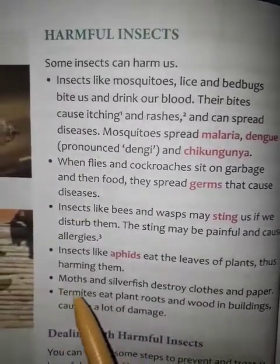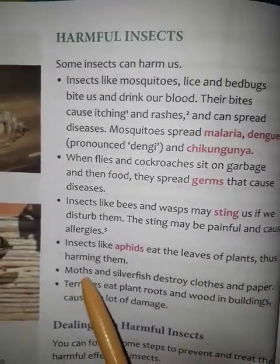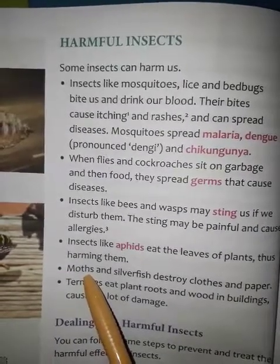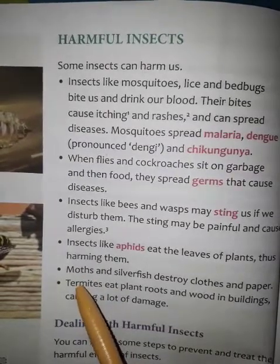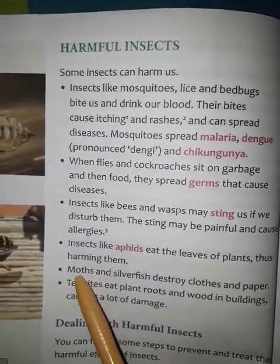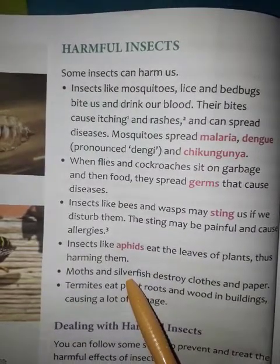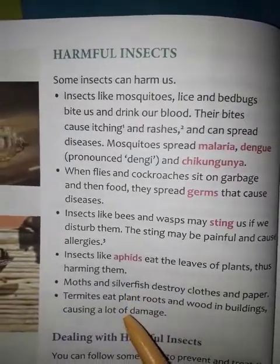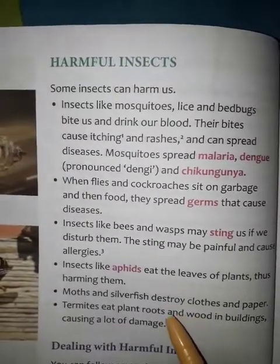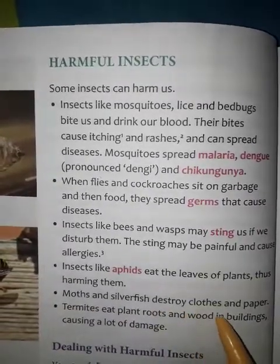Point number five: moths and silverfish destroy clothes and paper. Moth is similar to a butterfly but is the harmful one, while butterfly is useful. Silverfish are small white insects which we find amongst old clothes and books, and they eat old clothes, books and paper a lot. So silverfish and moths destroy old clothes and paper.